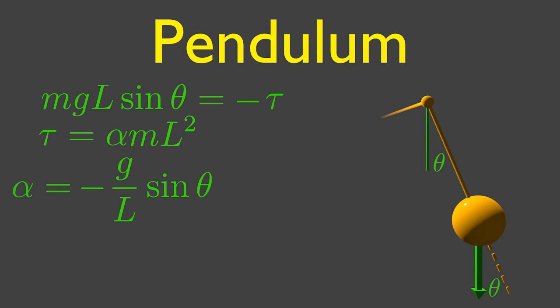To fix it, notice that we can use fact one to replace sine theta with theta, as long as our angle is not too large. Now this looks like fact number two, with g over l as our constant. So the period is two pi square root l over g.